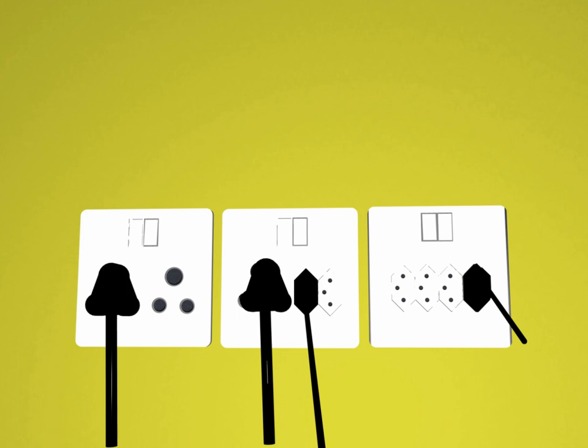IEC 60906-1 IEC System of Plugs and Socket Outlets for Household and Similar Purposes, Part 1, Plugs and Socket Outlets 16A 250V AC. Brazilian Standard NBR 14136, July 2001. South African Standard SANS 164-2-2006. World Plugs, Information on the Plugs, Sockets and Voltage Used Around the World.